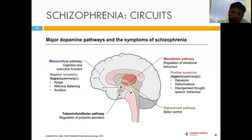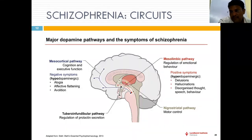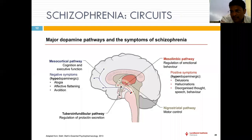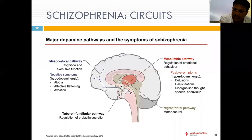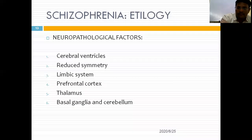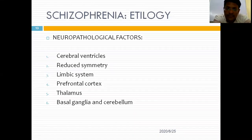For positive symptoms, the mesolimbic pathway is mainly involved — dopamine is increased, leading to psychotic features. For negative symptoms, the mesocortical pathway is responsible — dopamine is reduced. The tuberoinfundibular pathway and nigrostriatal pathway are mainly related to side effects of antipsychotics: the nigrostriatal pathway causes movement disorders, and the tuberoinfundibular pathway causes hyperprolactinemia.